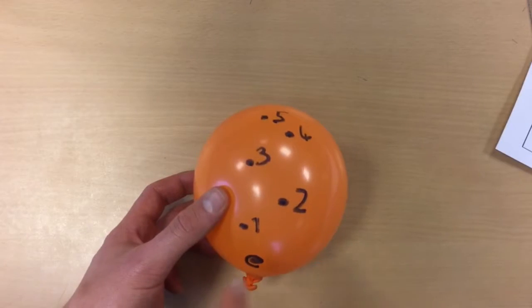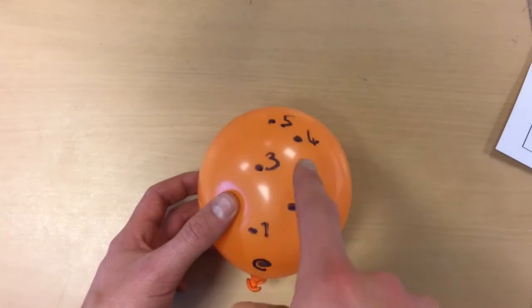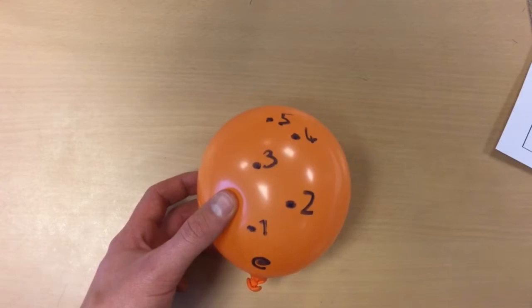So here we have the balloon, we've got the Milky Way at the bottom and what I've done is I've drawn subsequent galaxies that move further away from the Milky Way.